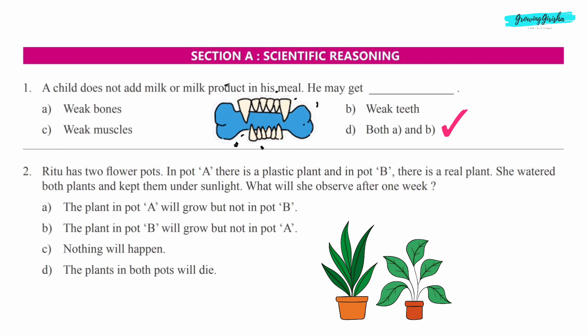Ritu has two flower pots. In pot A there is a plastic plant, and in pot B there is a real plant. She watered both plants and kept them under sunlight. What will she observe after one week?